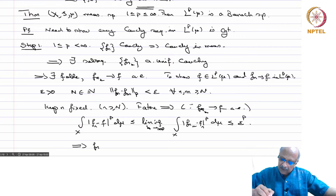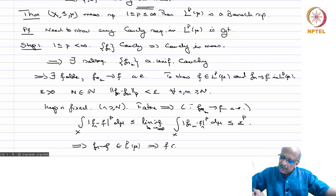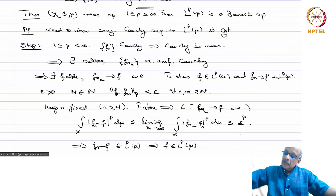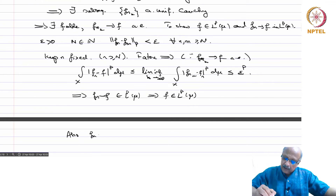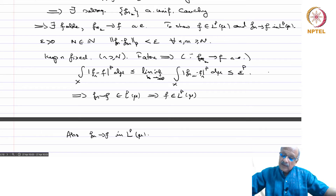This implies that f_n - f belongs to LP(mu), and since f_n is already in LP(mu), this implies f is in LP(mu). Also, f_n converges to f in LP(mu) for all n ≥ N. This proves the theorem for the case 1 ≤ p < infinity.